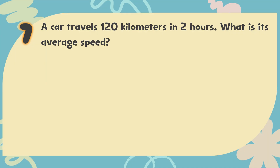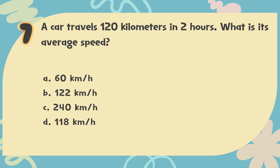Number 7. A car travels 120 km in 2 hours. What is its average speed? The choices are: A. 60 km per hour, B. 122 km per hour, C. 240 km per hour, D. 118 km per hour.